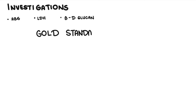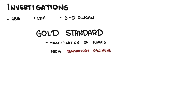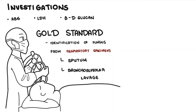The gold standard to diagnose Pneumocystis pneumonia is identification of the fungus through respiratory secretions, either from induced sputum specimens or from bronchoalveolar lavage. Once respiratory specimens are obtained, many stains can be used to help identify trophic forms or the cyst forms of the fungus. PCR can also be used to definitively identify the organism.